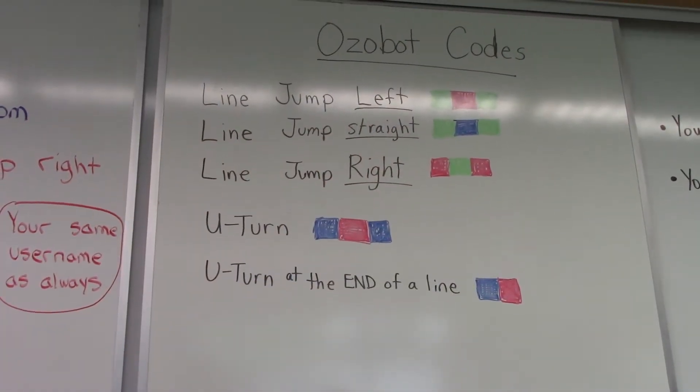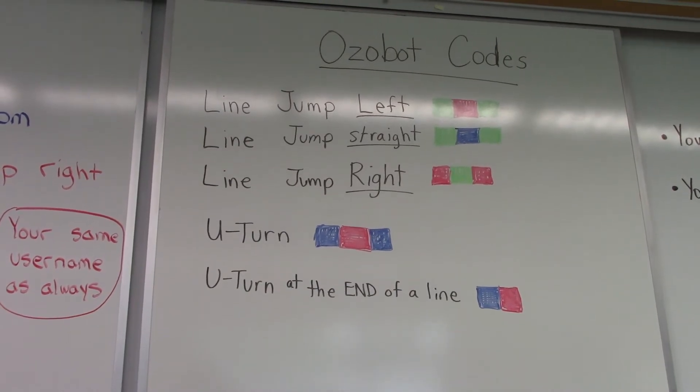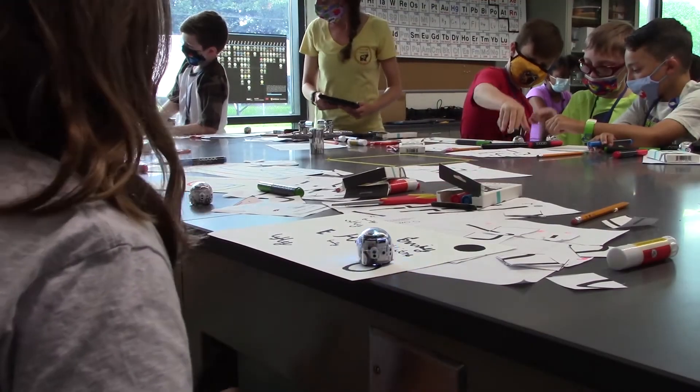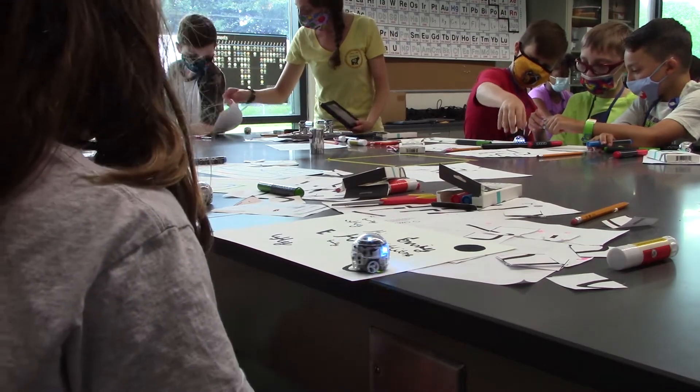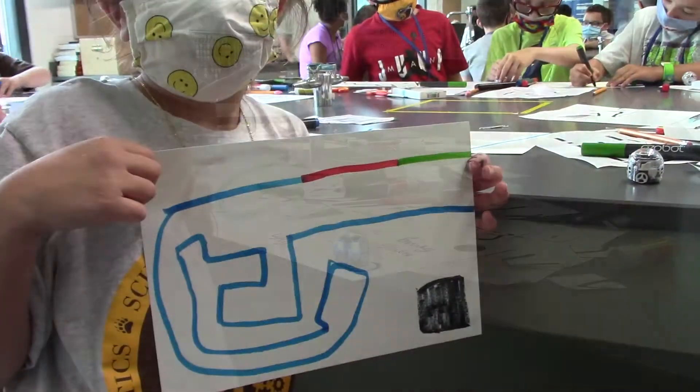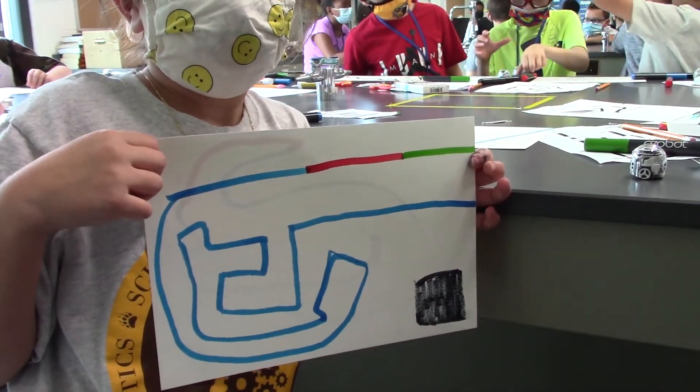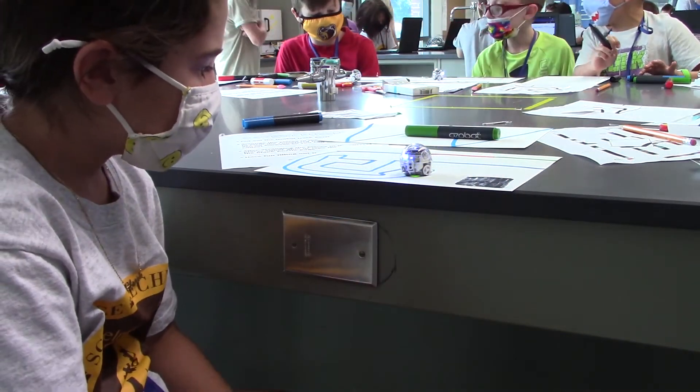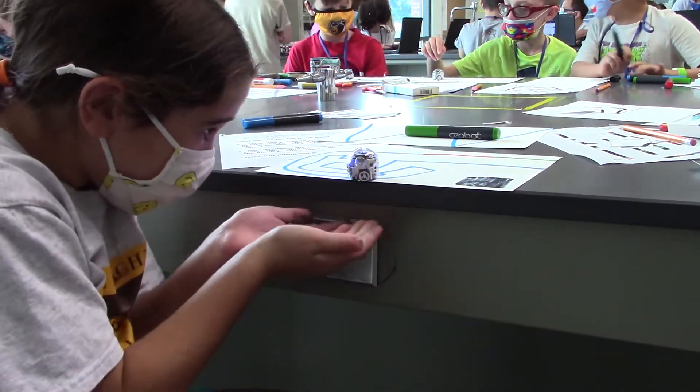While we're working on our Ozobots, we start with simple codes using the black line to get the kids to get the Ozobot moving and then as they learn more about how the Ozobot works, they get to get creative. There's a lot of trial and error and perseverance because sometimes the Ozobot doesn't move the way we want it to.